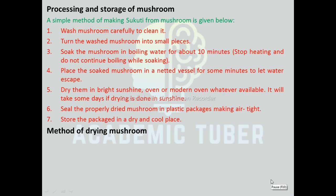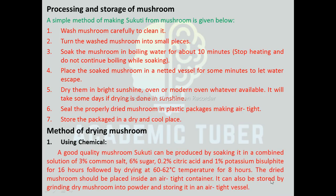Method of Drying Mushroom — First: Using Chemicals. A good quality dried mushroom can be produced by soaking it in a combined solution of 3% common salt, 6% sugar, 0.2% citric acid, and 1% potassium bisulphite for 16 hours, followed by drying at 60 to 62 degrees Celsius for 8 hours. The dried mushroom should be placed inside an airtight container. It can also be stored by grinding dry mushroom into powder and storing it in an airtight vessel.